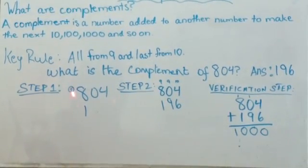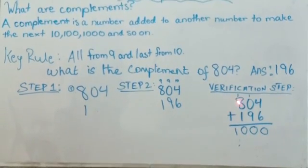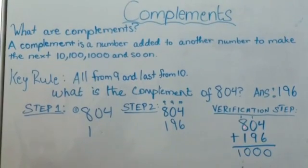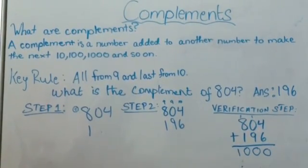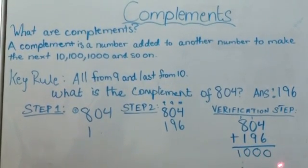The complement of eight hundred and four is hundred and ninety-six. Let's check our answer. Eight hundred and four plus one ninety-six equals thousand. So thousand is our best.